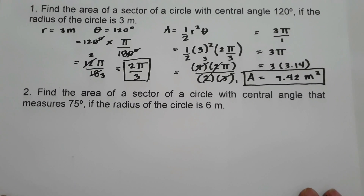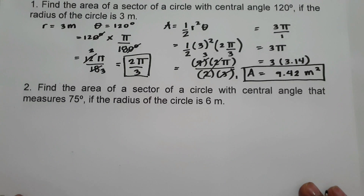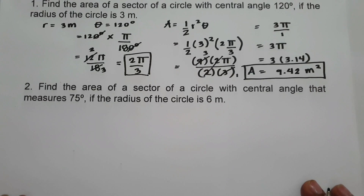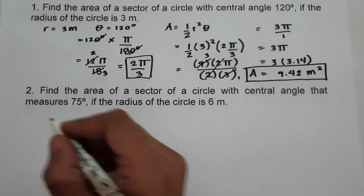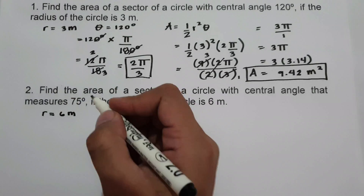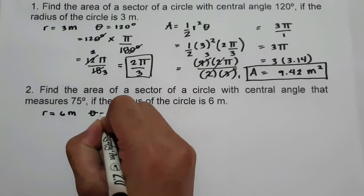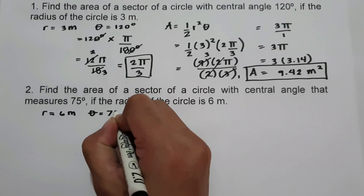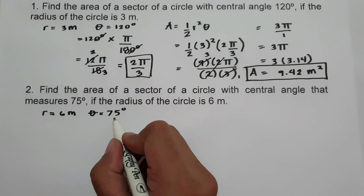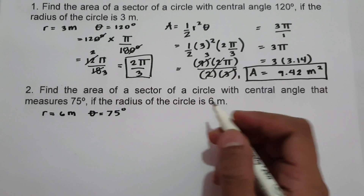On example number 2, find the area of the sector of a circle with a central angle that measures 75 degrees if the radius of the circle is 6 meters. The given are: radius is 6 meters, and theta, the central angle, is 75 degrees. Again, let us convert degrees to radian because the area of the sector formula requires radian.